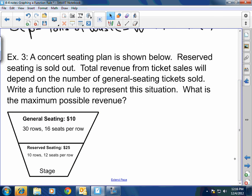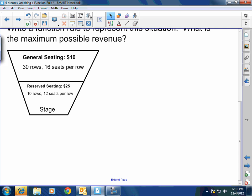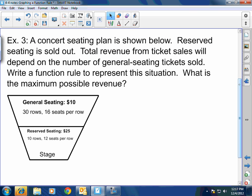This is a good one. Hopefully, it's a great one since you guys go to concerts and stuff. A concert seating plan is shown below. Let me explain the seating plan before we go any further. It says here that the bottom, close to the stage, that's the reserve seating at $25 a seat and there's 10 rows and 12 seats per row. So how many total seats in the reserve seating? 120. Good. The general seating is $10 a ticket, 30 rows times 16 seats per row. So how many total available seats are there? 480. Very good.